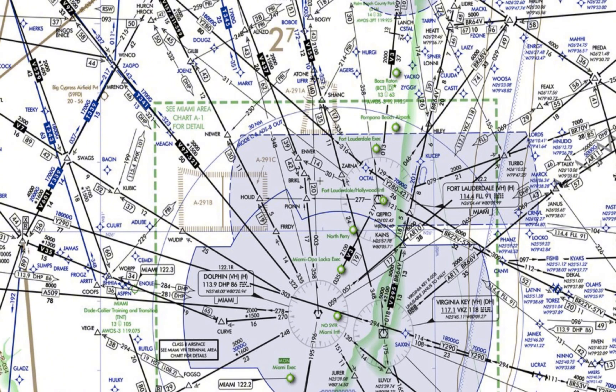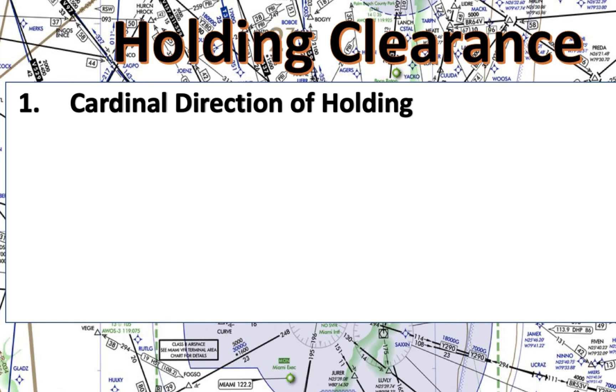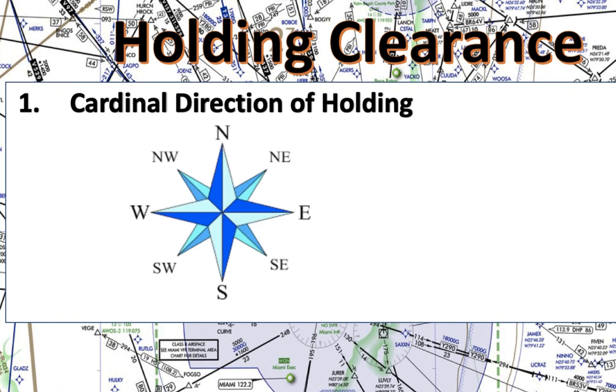When ATC advises you they're ready to give holding instructions, make sure you grab a piece of paper, an iPad, or something to write down the information, because it can be lengthy and you won't remember it by heart. The good news is that these instructions are given in a standard format, so you'll know basically what to expect — it just takes practice to get proficient. The very first thing they'll give you is the cardinal direction of the hold, using the eight cardinal compass points: north, northeast, east, southeast, south, southwest, west, or northwest.